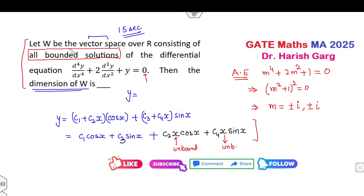This implies that if you consider only the bounded solution, c2 and c4 both must be 0. Then only it contains the bounded solution; otherwise, it will be unbounded.